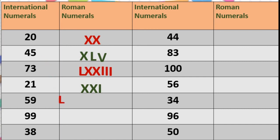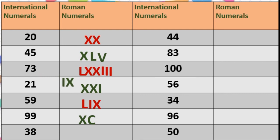21 is very easy. For 59: write L for 50, then IX for 9 — that is LIX. For 99: write C for 100, then X to the left of C gives 90, so XC, then write IX for 9 — giving XCIX, which is 90 plus 9 equals 99.